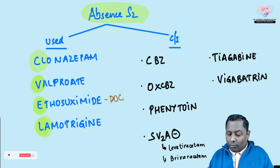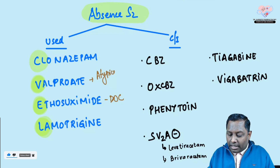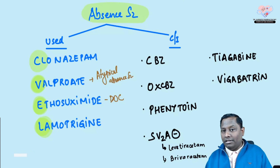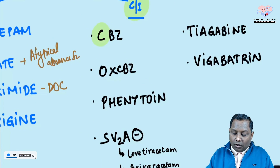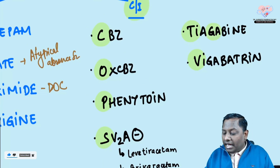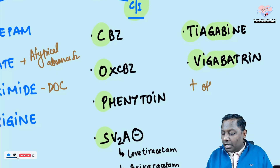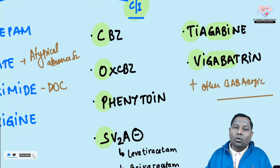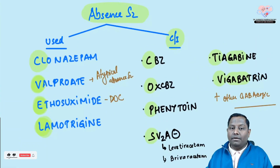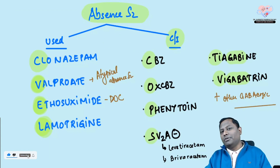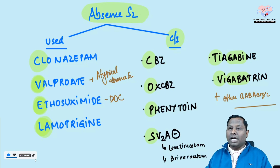Ethosuximide is the drug of choice; lamotrigine can also be used for atypical absence seizure, where valproate is preferred. For atypical absence, there can be motor involvement along with loss of consciousness. Drugs contraindicated in absence seizure — remember 'COPS at the TV': Carbamazepine, Oxcarbazepine, Phenytoin, SV2 inhibitors (levetiracetam, brivaracetam), Tiagabine, and Vigabatrin. These worsen absence seizure by further slowing neural firing, which is already at 3 Hz spike-and-wave pattern.